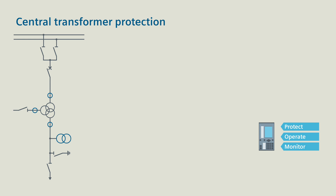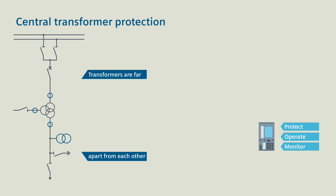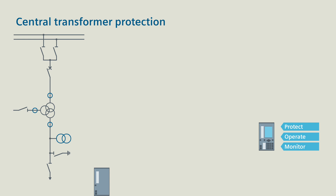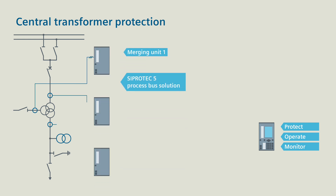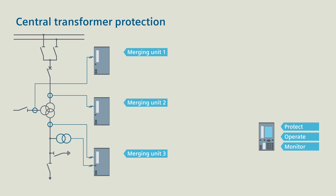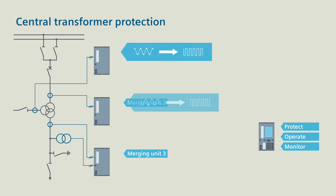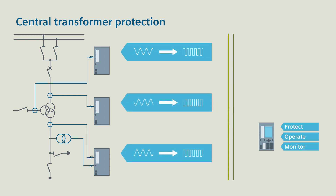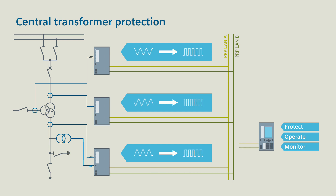The current transformers and the voltage transformer are far apart from each other. In this case, a CProtek 5 process bus with three individual merging units is an appropriate solution. The merging units digitalize the measured values collected by the transformers directly at the process, and then send them in three independent data streams via the process bus to the CProtek 5 device.